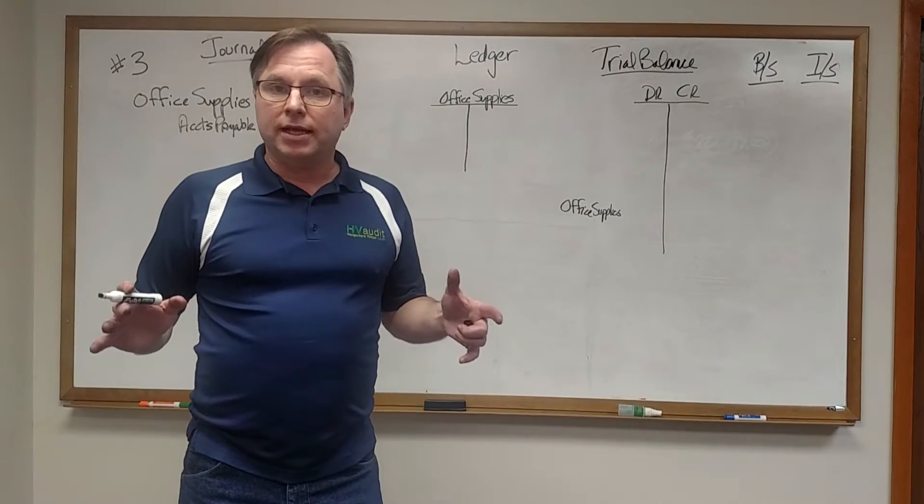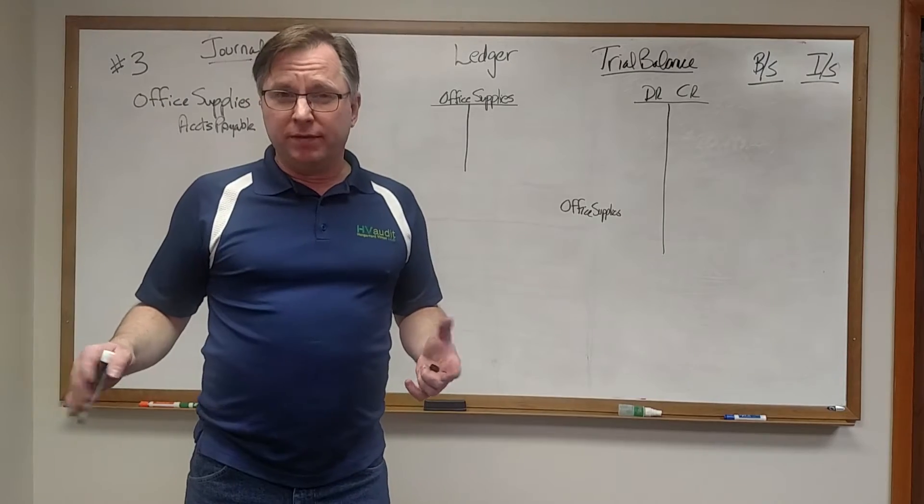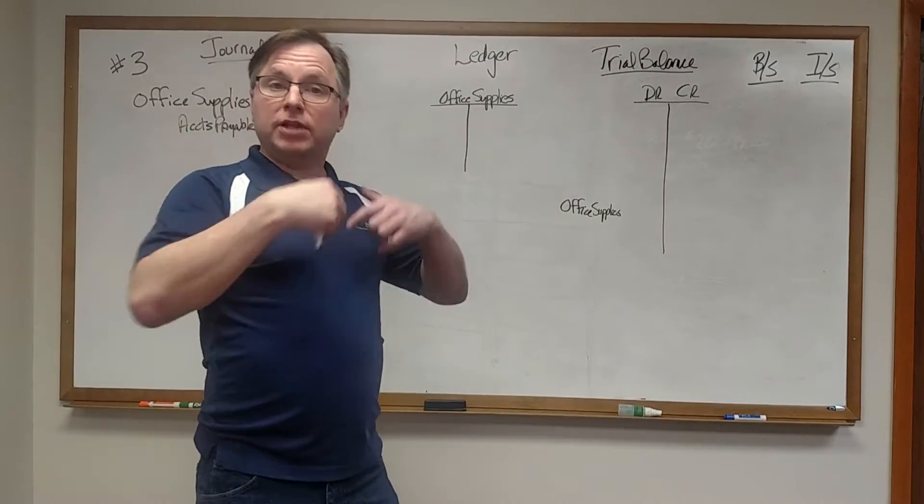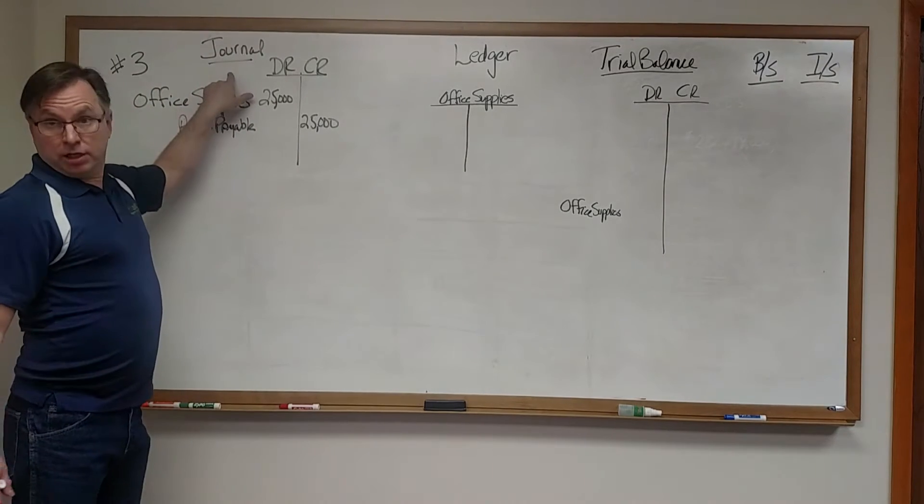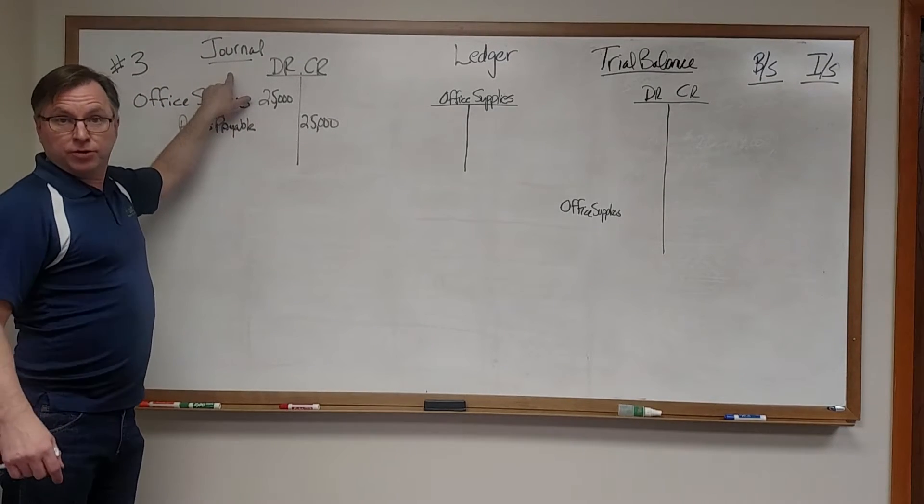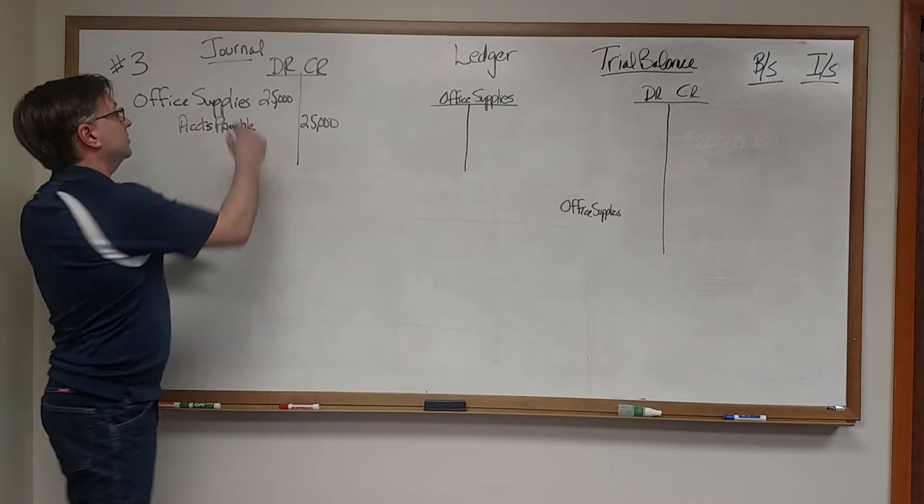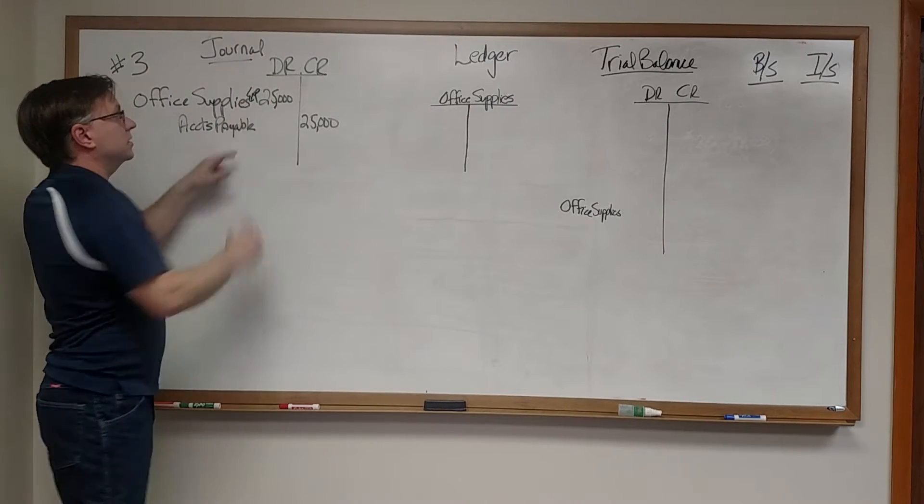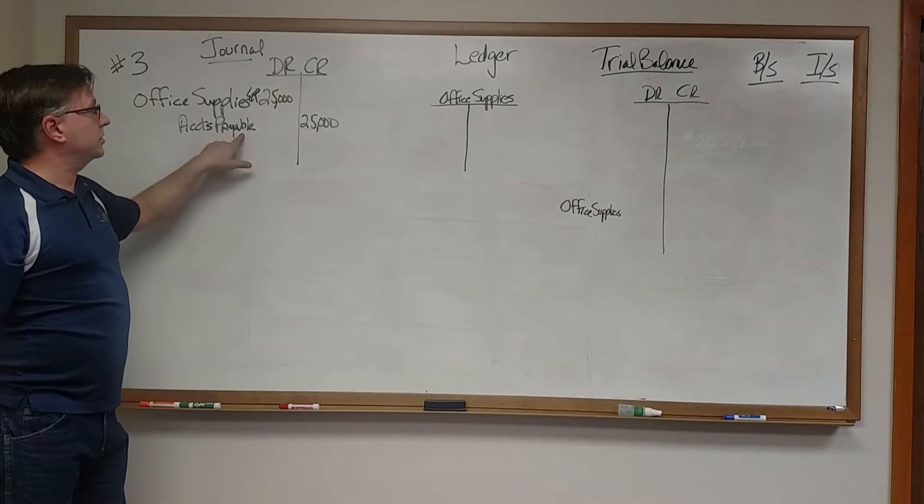You've got through the entire 14 entries for the journal and half the exam is pretty much over with. Now comes the part of laying it out as an accountant would. We've got our journal entry and we're going to use question number three as the example. We had office supplies expense of $25,000 and accounts payable $25,000.